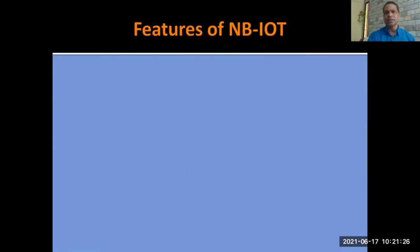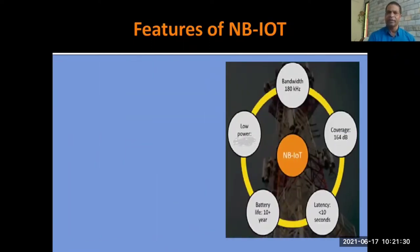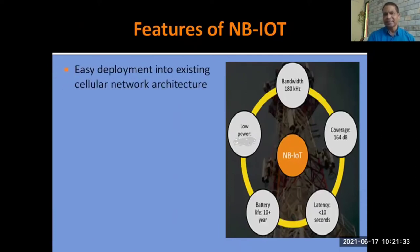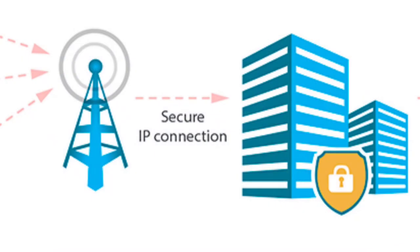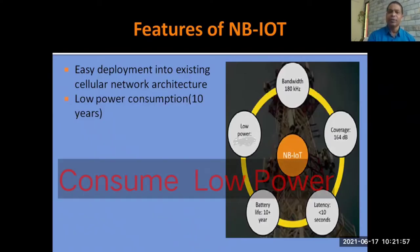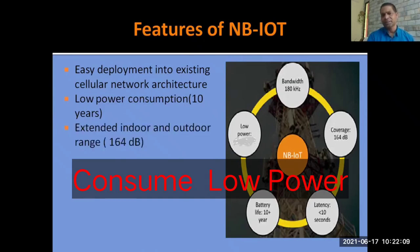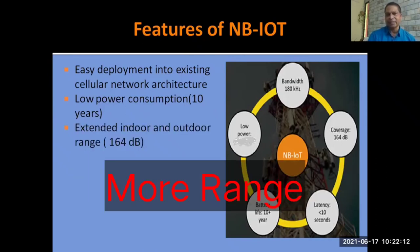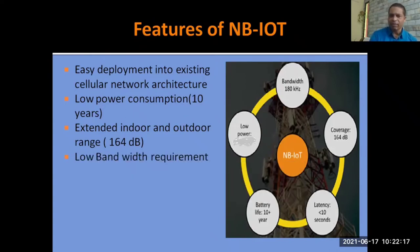What are the features or properties of NB-IoT that make it different from other existing technologies? First, NB-IoT is deployed into existing cellular networks meant for 3rd, 4th, and 5th generation. It consumes very low power and provides more indoor and outdoor range, approximately 164 dB.